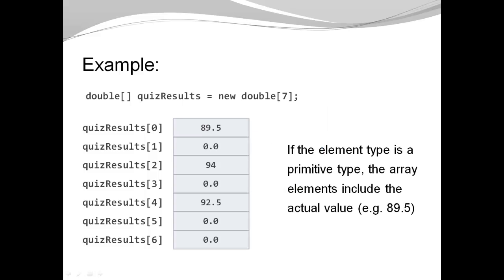I want to point out that if the element type is a primitive type, the array elements include the actual value. So in our case, the element type is double, because this is a double array, and each array element includes the actual value. It can be the default value, 0. It can be the newly entered value, 89.5 or 94.